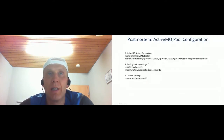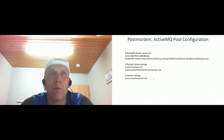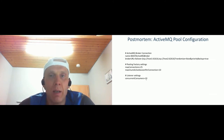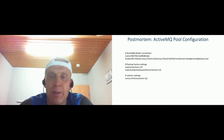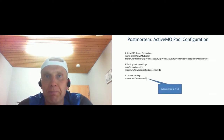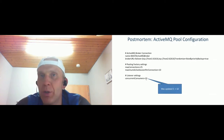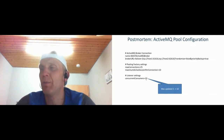Then I looked at exactly what had changed. There was some ActiveMQ configuration: a URL for the broker, maximum connections, and a parameter — maximum active sessions per connection — which was set to 10. There was also a parameter for concurrent consumers, which is a parameter for the listener to get information in parallel, so not only one thread but some threads. In this case it was 10. I saw what had changed: it was 5 before and had become 10. This was one of the changes in my deployment.